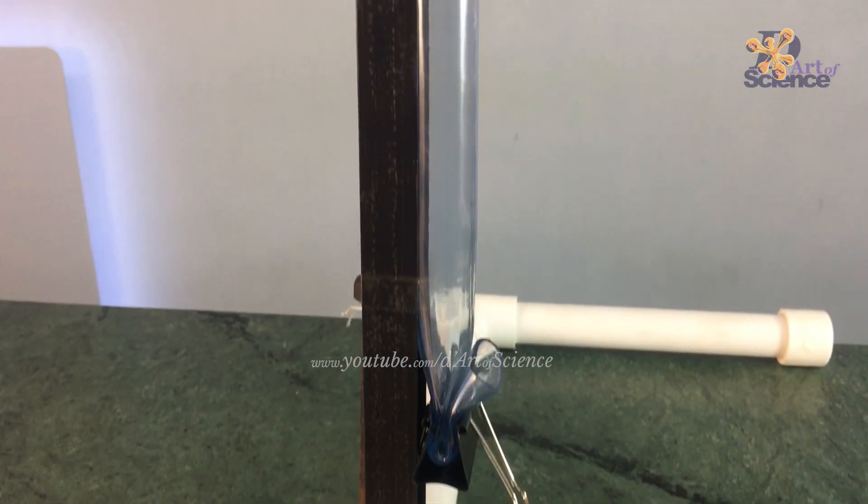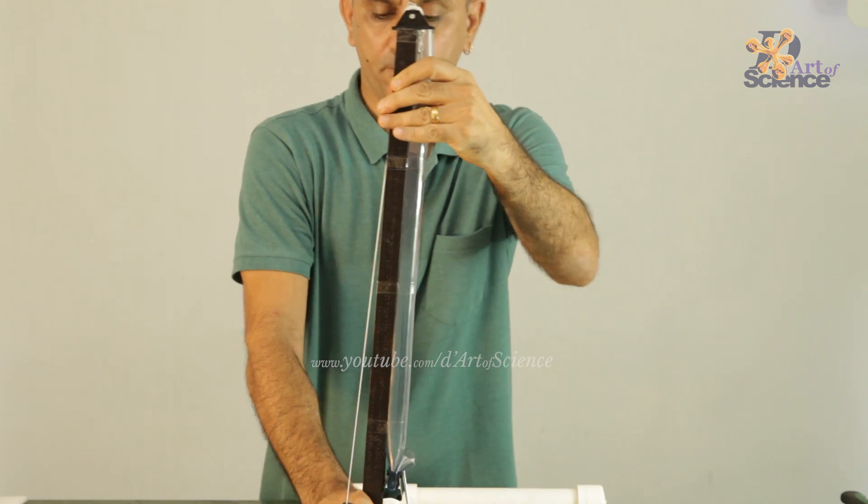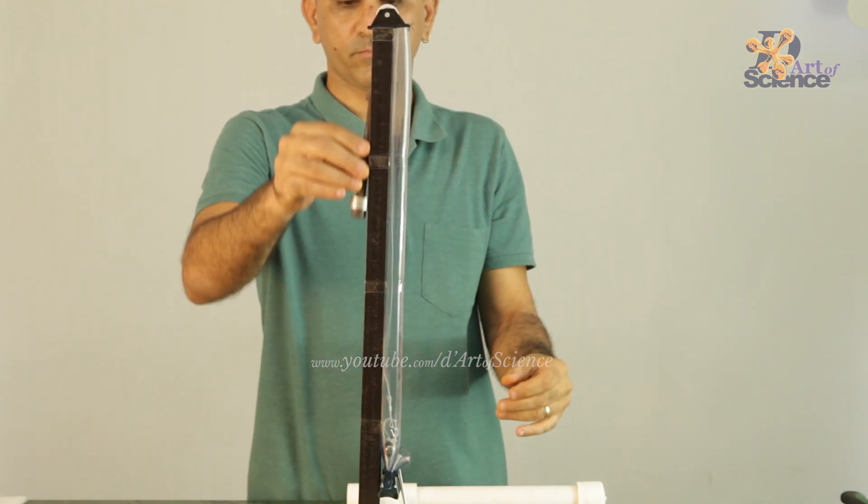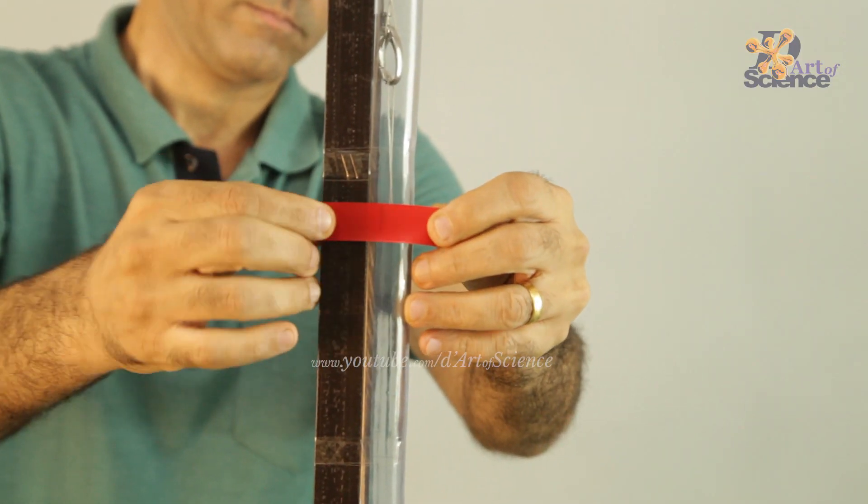So this is what we have till now. Just tilt the pipe structure so that it leans forward a bit. This is so that the object inside will not get dragged along the side of the pipe. Now with the colored tape, put a start and a stop point like I am doing here. Make sure it's not too close to the top or bottom.